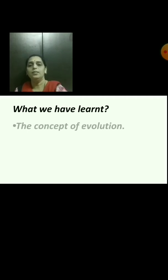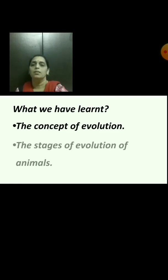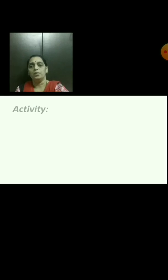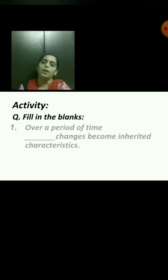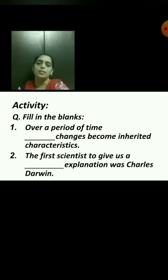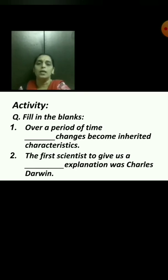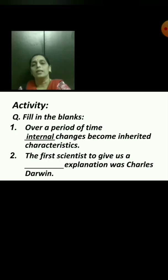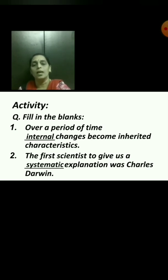Today we have learned the concept of evolution and the stages of evolution of animals. Now let's do a small activity — fill in the blanks. First: 'Over a period of time, dash changes become inherited characteristics.' Answer: internal. Second: 'The first scientist to give us a systematic explanation was Charles Darwin.'